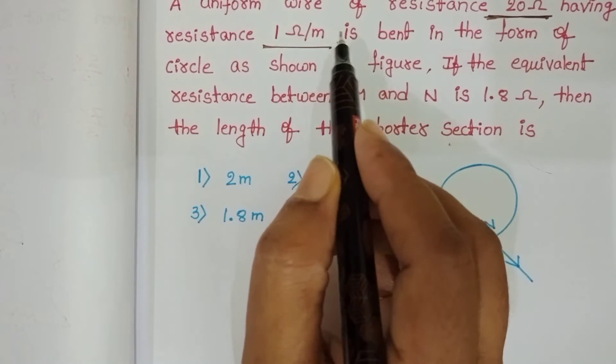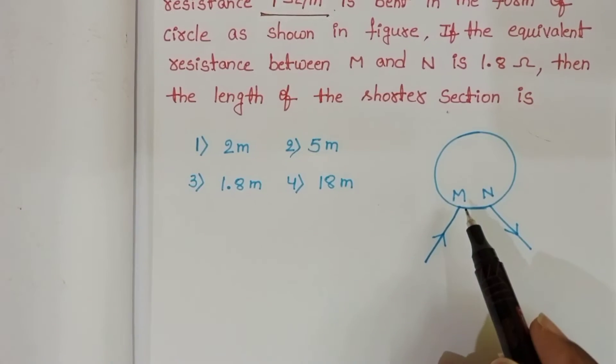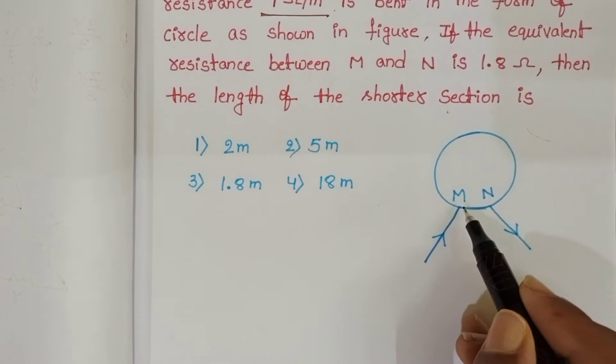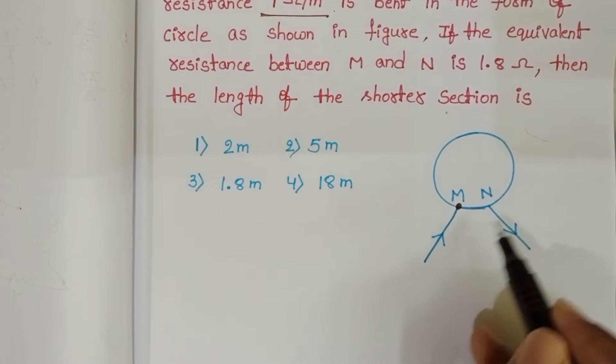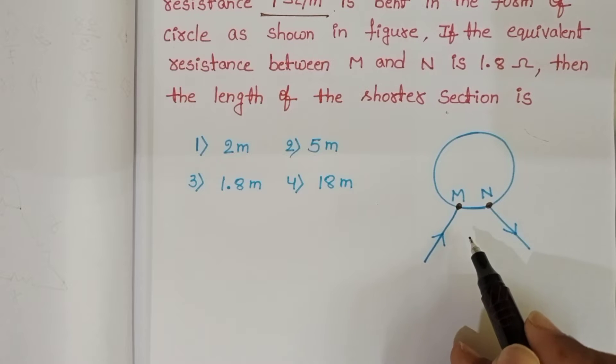So this 20 meter wire is bent in the form of a circle, but here two terminal points are there. The first point is M and the second point is N.